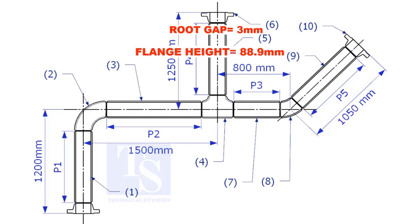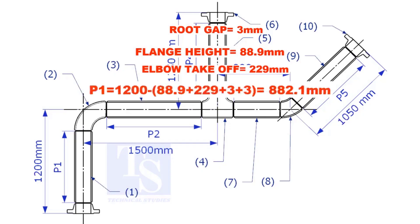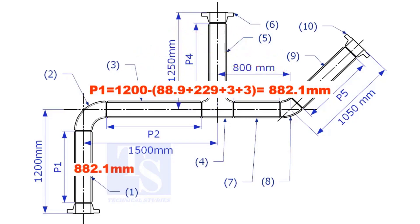Assume the root gap is 3mm. Substitute the sum of the height of the flange, elbow takeoff, and 2 root gaps from the total length of 1500. Length of pipe P1 is 882.1mm.